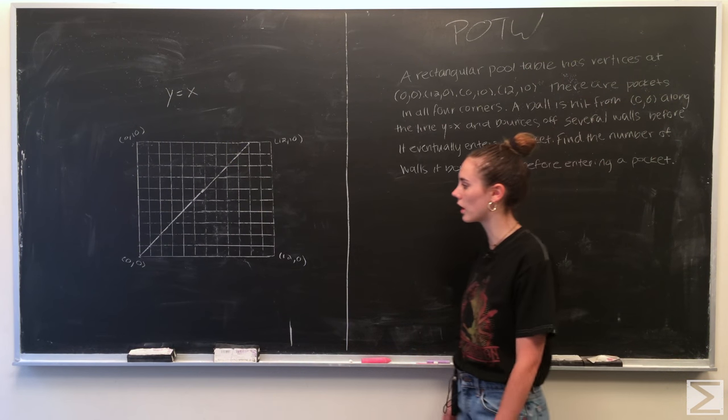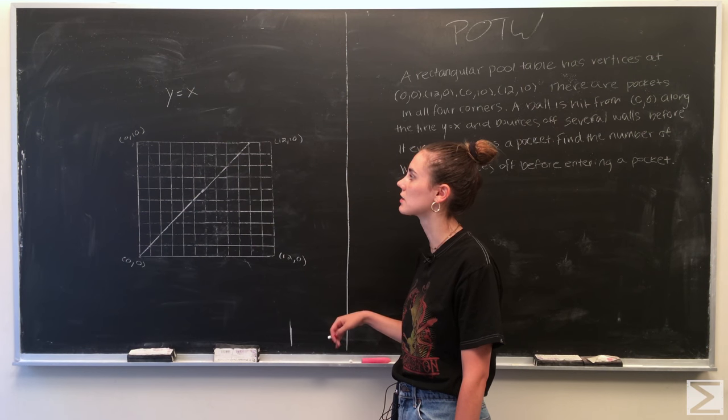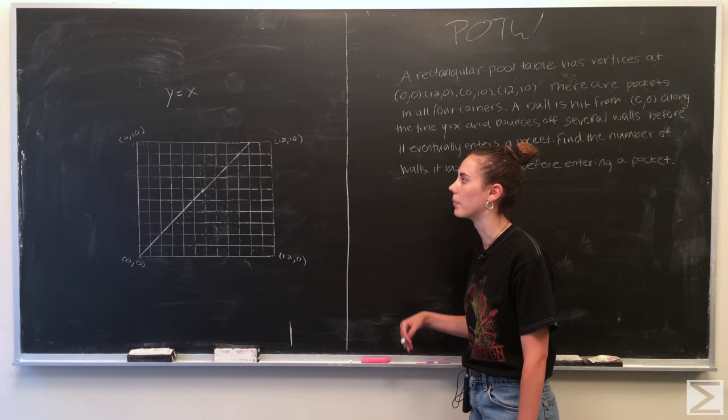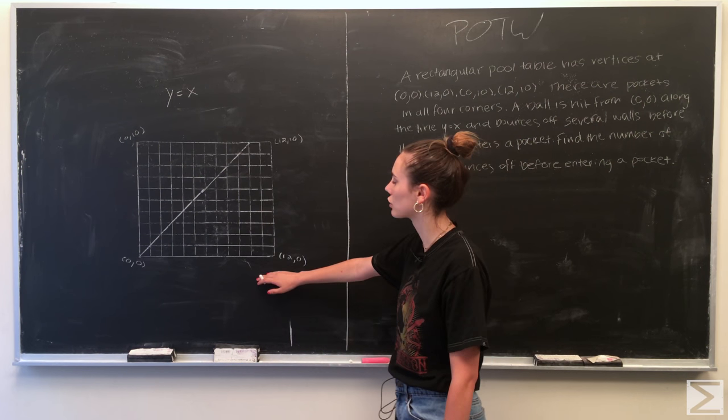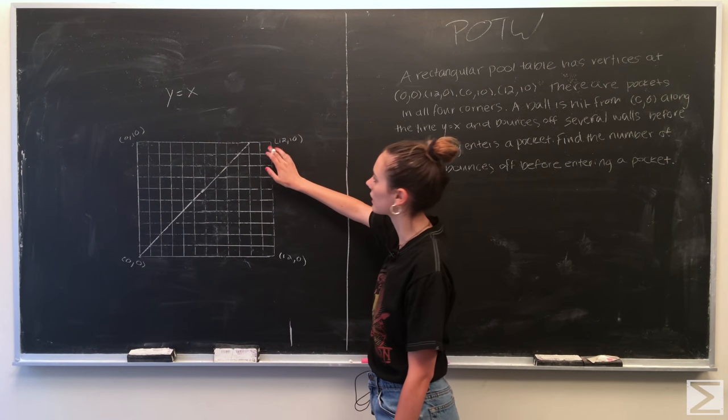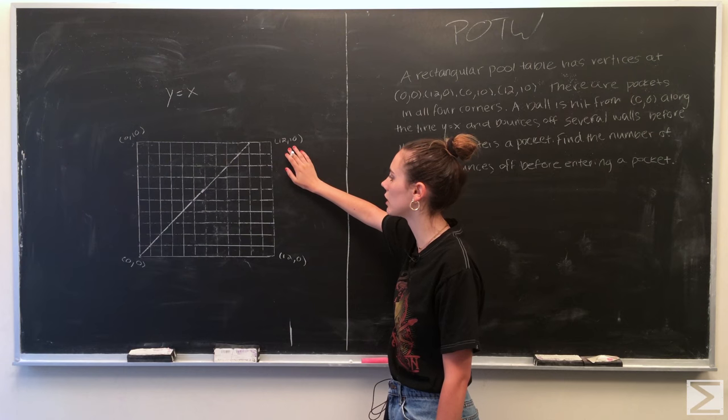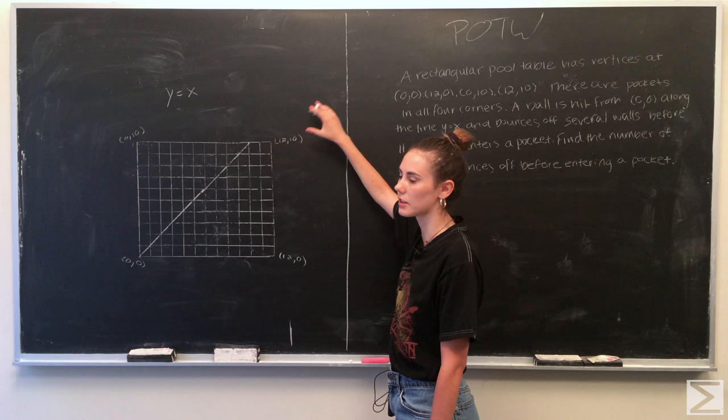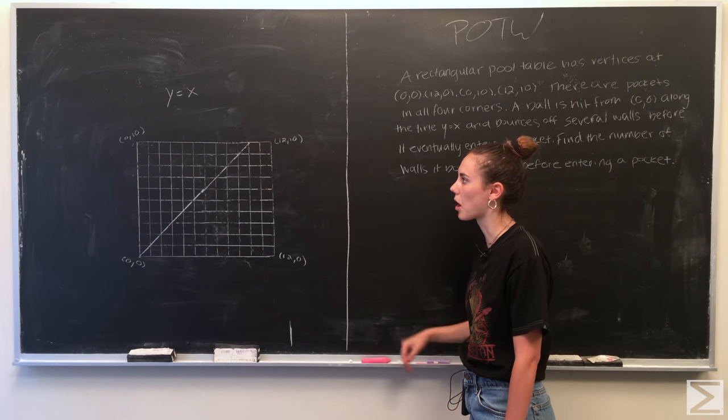So what we're going to do is, since the line y equals x is just the opposite of itself during a reflection, we can imagine that there's another 12 by 10 graph directly off of this corner right here at (12,10). And trace just the straight line of y equals x from this graph into the next one until the ball ends up in one of the pockets.